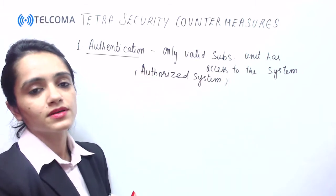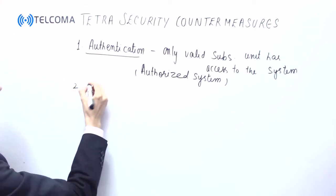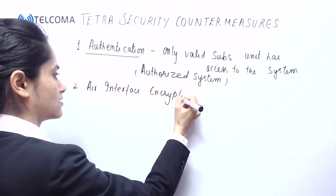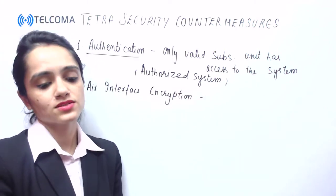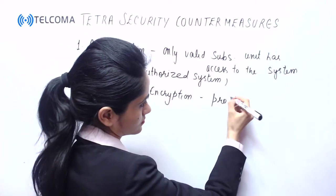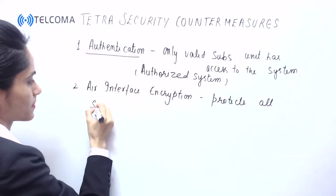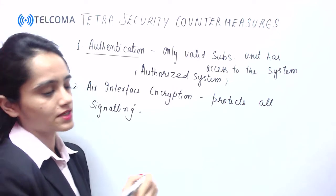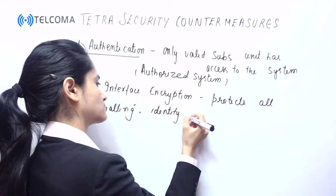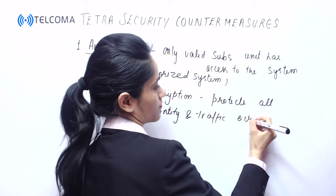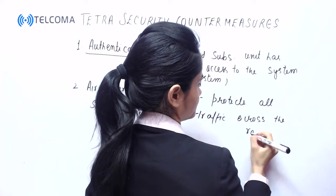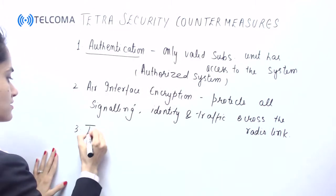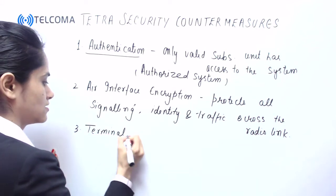The next countermeasure is air interface encryption. It protects all signaling, identity, and traffic across the radio link.